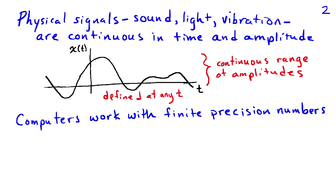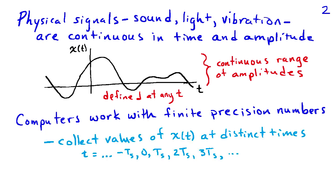Now computers work and store finite precision numbers, so this continuum in both time and amplitude is incompatible with storage and analysis by computer. So what we're going to do is collect values of the signal at distinct times, say, intervals spaced by t sub s. So that would mean we evaluate the signal at times t equals minus t sub s, zero, t sub s, two t sub s, three t sub s, and so on. And then we're going to represent the value at each of those times with b bits. And that gives us two raised to the b power distinct amplitude levels that we can describe.